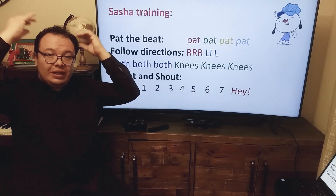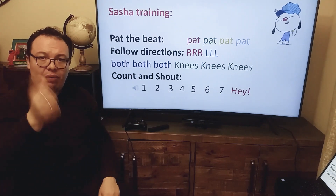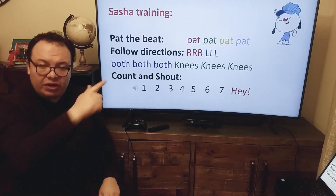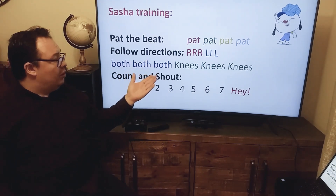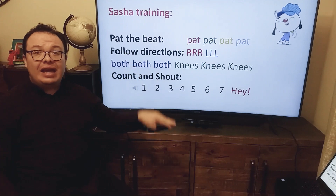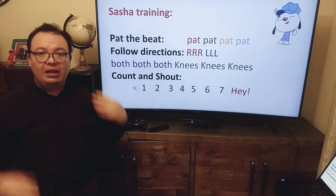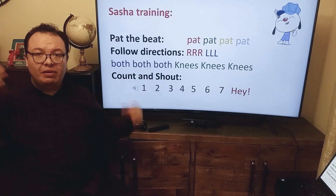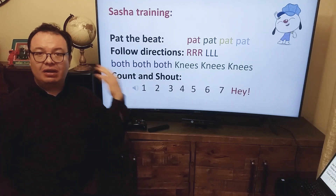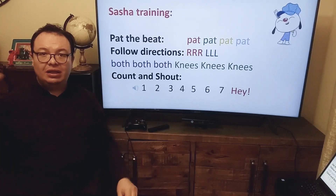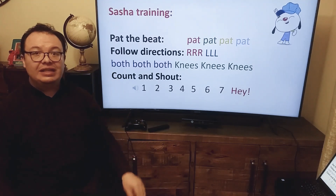And then say it with me: Sasha, Sasha, Ras-va-tree. Then we'll start with our right and left stuff — like right, right, right. Left, left, left. Both, both, both. Ding, ding, ding. Right, right, right. Left, left, left. Both, both, both. This, this, this.